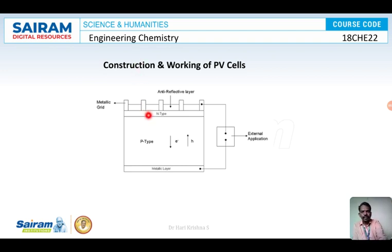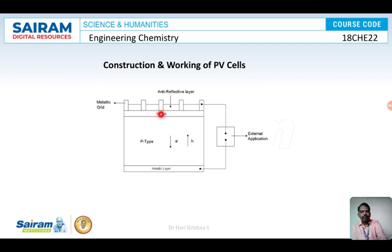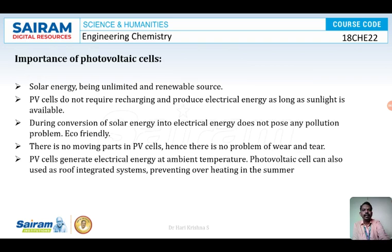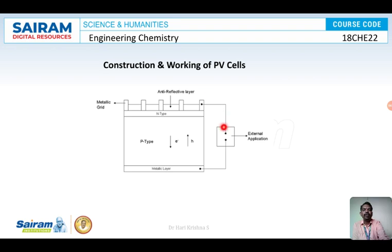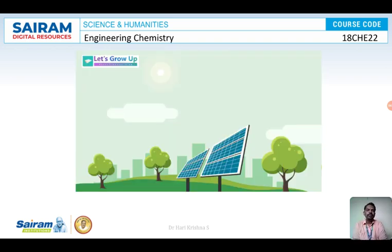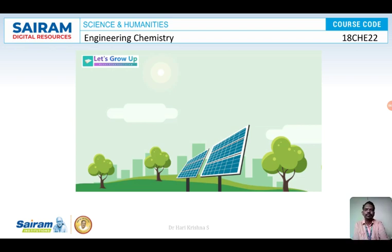The other electrical contact is the metallic layer at the back. When light radiation falls on the p-n junction, electron-hole pairs are generated. Since n-type is rich in electrons, all electrons drift towards the n-type and holes drift towards the p-type. When the two ends of the PV cell are connected externally, current flows — this current is called the photovoltaic current or PV current.